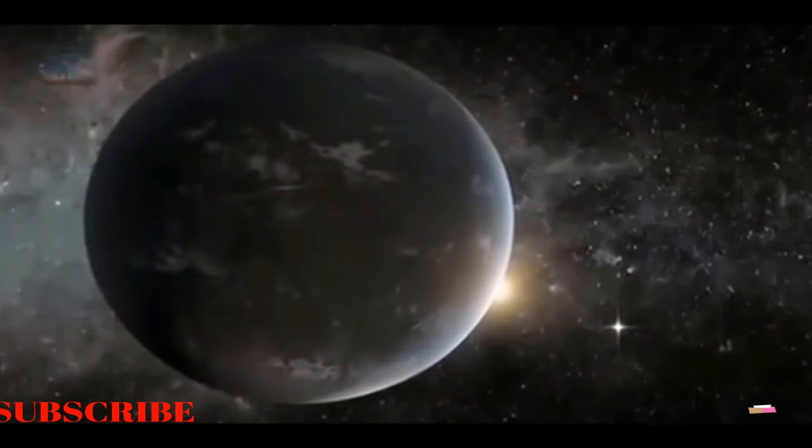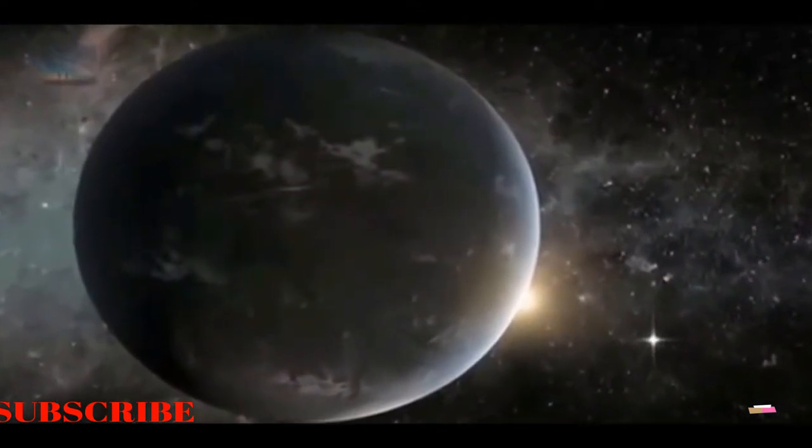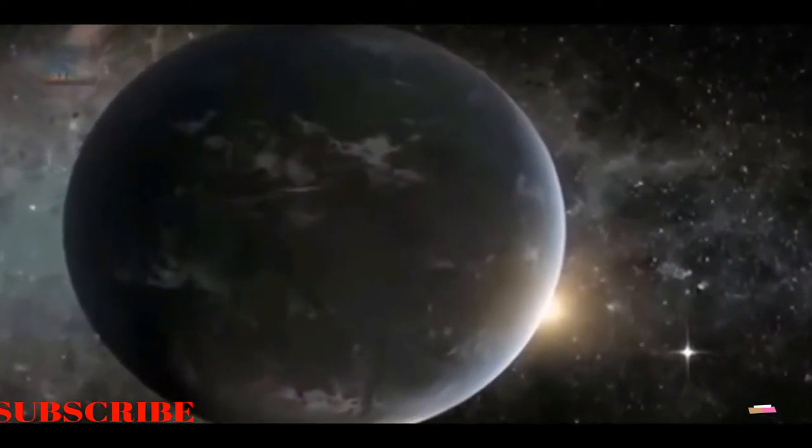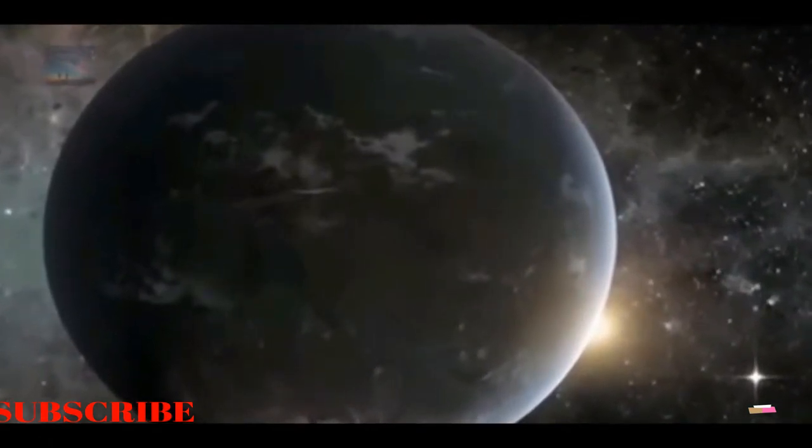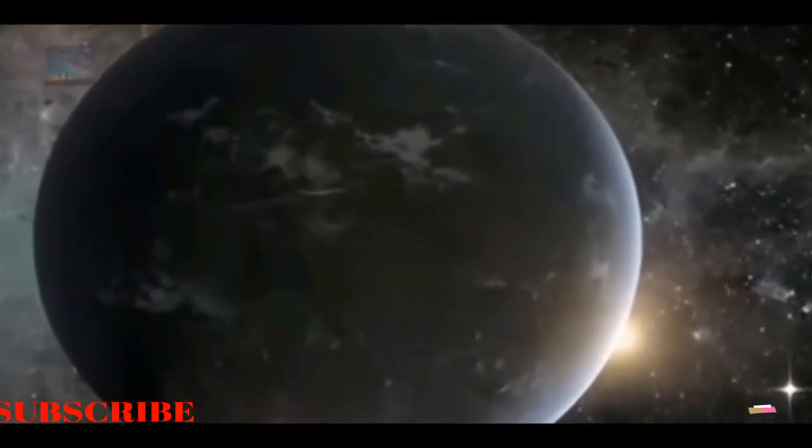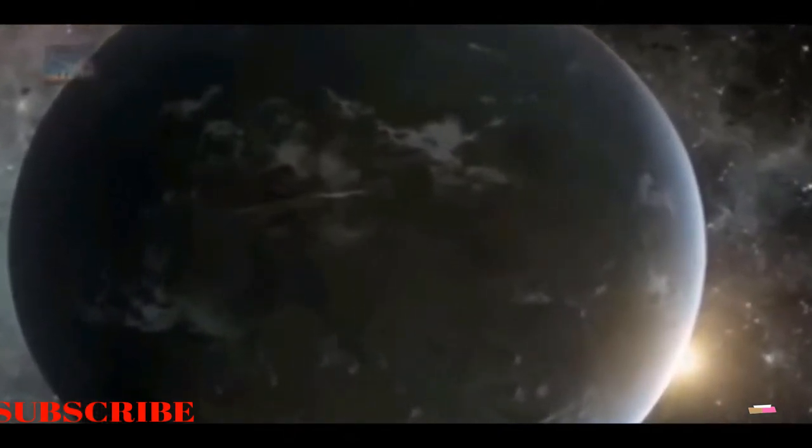But in 2014, based on similarities of the orbits of a group of recently discovered extreme Trans-Neptunian objects, astronomers hypothesized the existence of a super-Earth planet, 15 times the mass of the Earth and beyond 200 astronomical units with the possibility of a high-incline orbit at some 1,500 astronomical units.